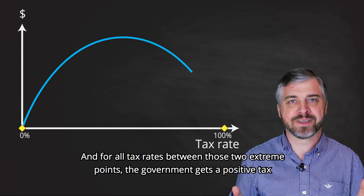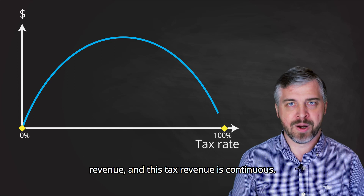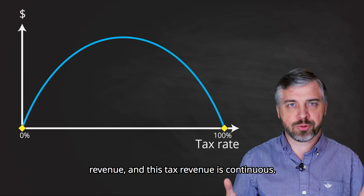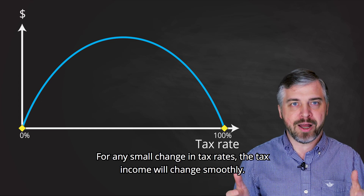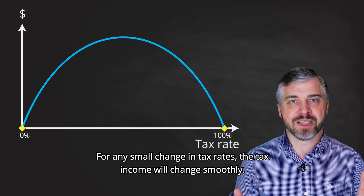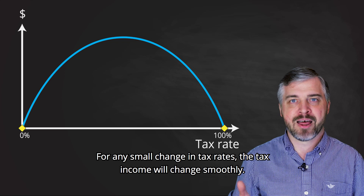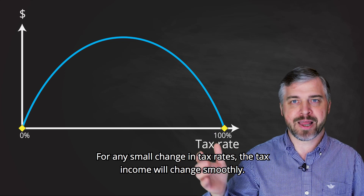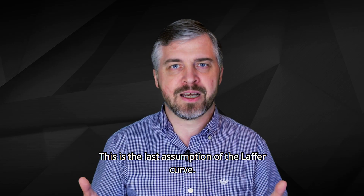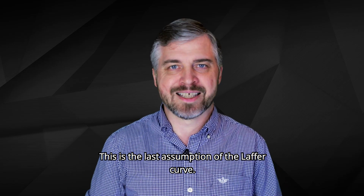And this tax revenue is continuous. For any small change in tax rates, the tax income will change smoothly. This is the last assumption of the Laffer Curve.